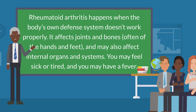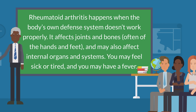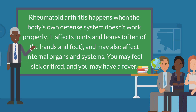Rheumatoid arthritis happens when the body's own defense system doesn't work properly. It affects joints and bones, often of the hands and feet, and may also affect internal organs and systems. You may feel sick or tired, and you may have a fever.